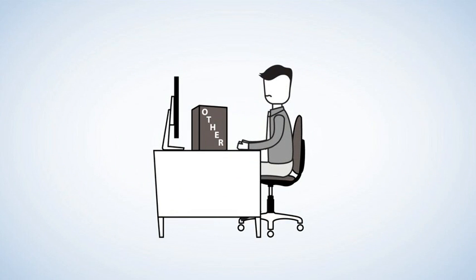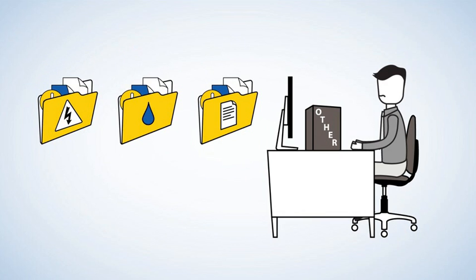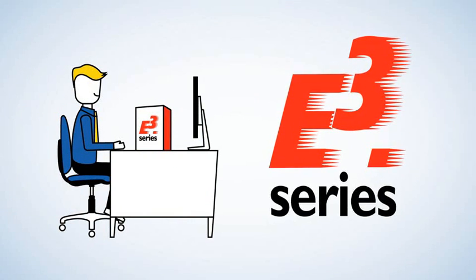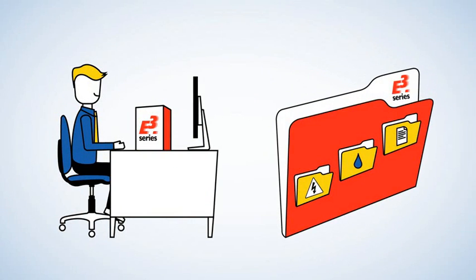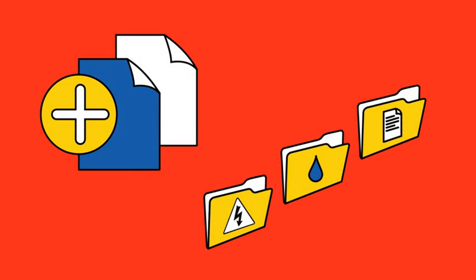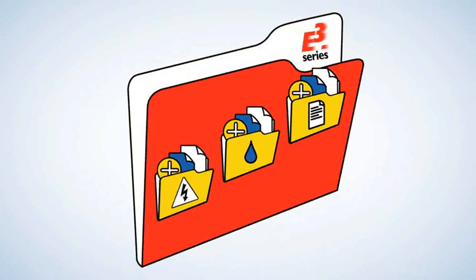See, unlike other offerings that draw graphics and create simple connections in separate project files, E3 series intelligently links project data and maintains a constant tie between the different views in a single project file. So schematic, cable, harness, fluid, and bill of materials are always connected. So if you place or change a part in one view, the other views are automatically updated.